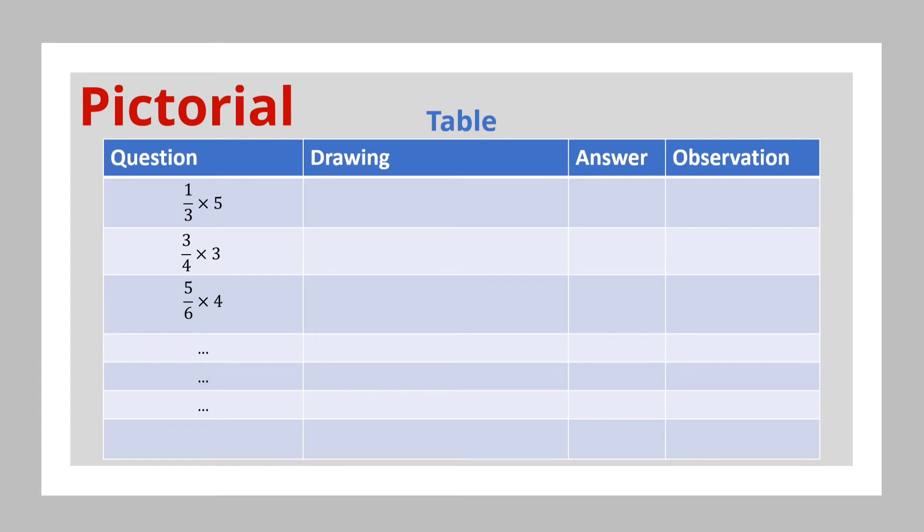If I had one-third times five, then the child will draw a bar and divide this bar into three equal parts like this. Please note that the child does not necessarily have to get the bar divided into three equal parts. This will get better in time as the child develops spatial awareness. After the child divides the bar into three equal parts, he then uses pencil and shades one-third of each of them.